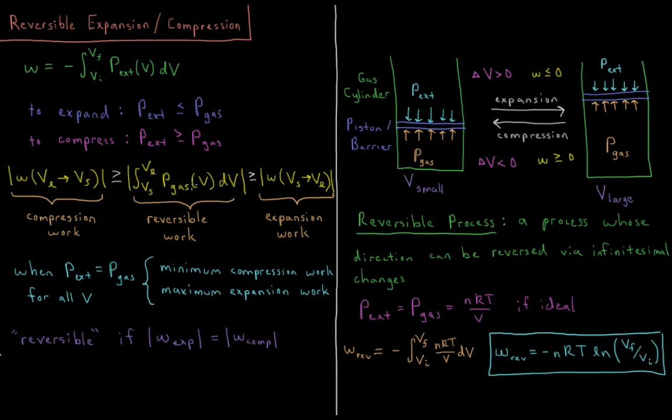But there's some happy medium in the middle here. So notice that each of these is a less than or equal to and a greater than or equal to. So what happens when the external pressure is always equal to the pressure of the gas? In that case, we can replace P external with the P of the gas in our integral, and the pressure of the gas is always equal to the external pressure, so whether we're expanding or compressing, the work that we do is always the same.